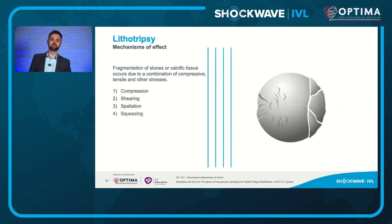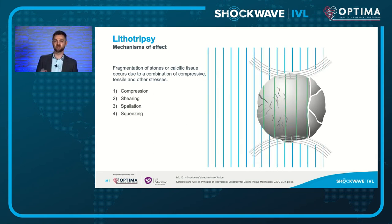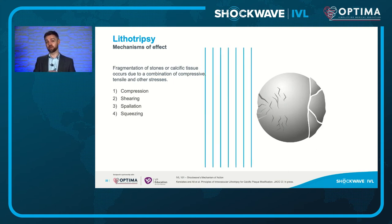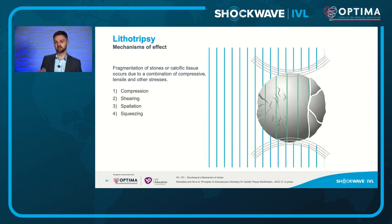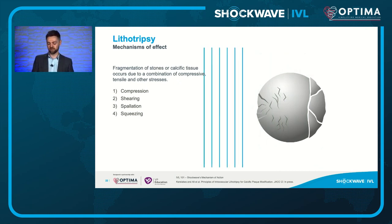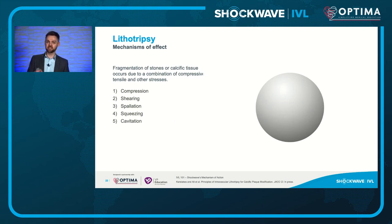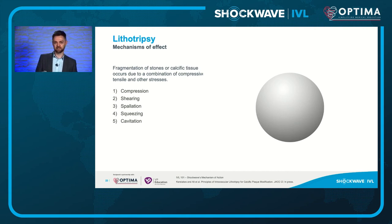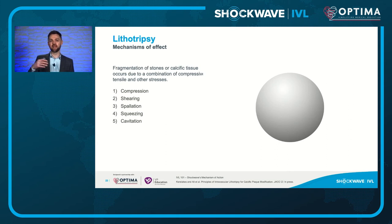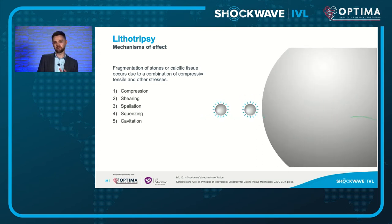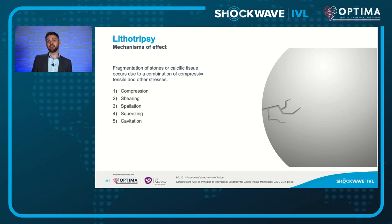Another force causing stone disruption is squeezing: the shockwave traveling through the stone moves at higher velocity than the same wave traveling around the outside of the stone, creating a squeezing force. Finally, there is cavitation — an important mechanism of stone erosion and tissue injury. The trailing negative pressure part of the shockwave, as it moves through any fluid medium, can induce cavity bubbles to form. If those cavity bubbles are in close proximity to a tissue surface, they can collapse asymmetrically, leading to a microjet of high velocity directed toward the stone surface, causing erosion and damage.